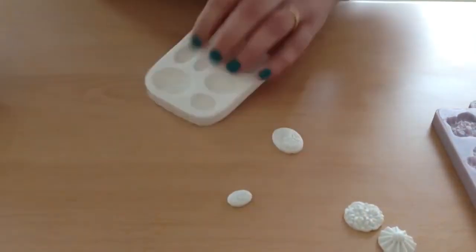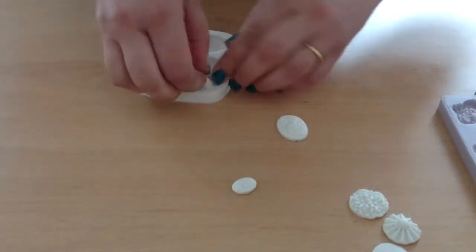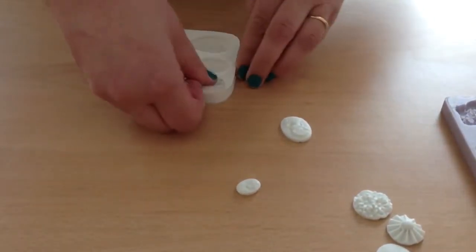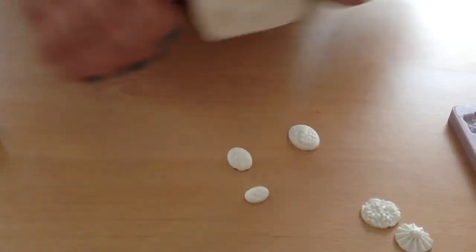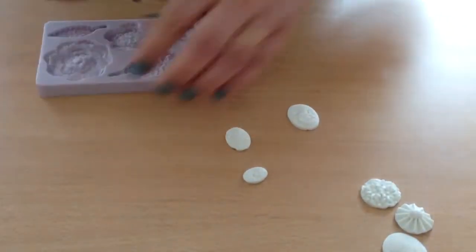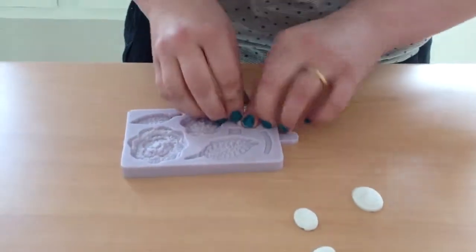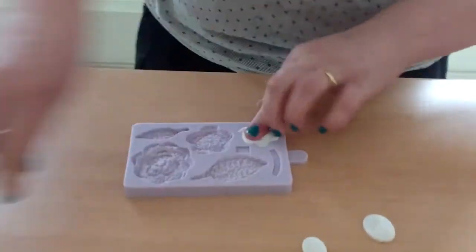Again, another one there for you. You can see how easy and how quickly it is to pop them out. And this is just pre-treated sugar paste that has already had the sugar cell mixed in with it.